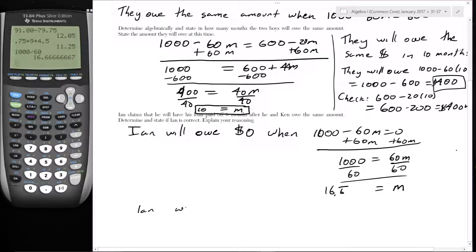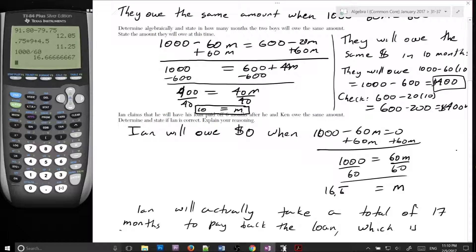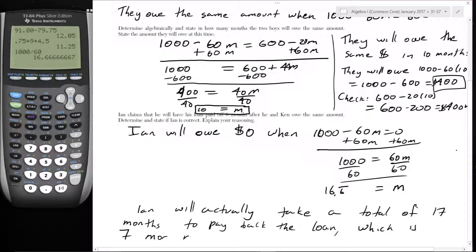Adding 60M and dividing by 60, we get M equals 1,000 divided by 60, which is 16.6 repeating months. After 16 months Ian will still owe money, so it takes a total of 17 months to pay back the loan — which is 7 more months after the 10 months, not 6. So Ian is incorrect.